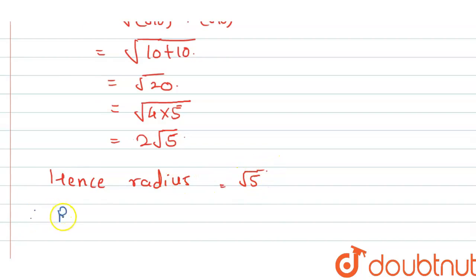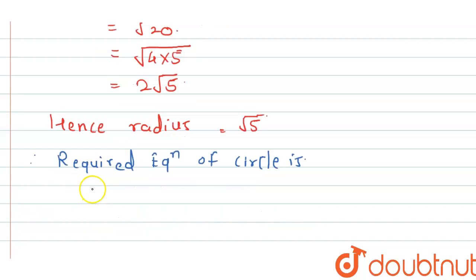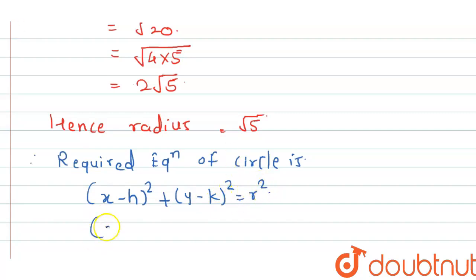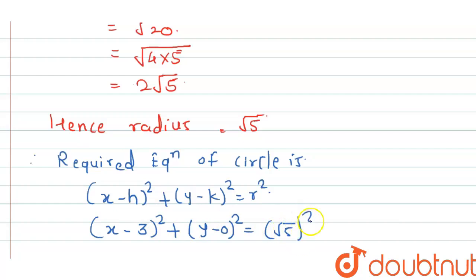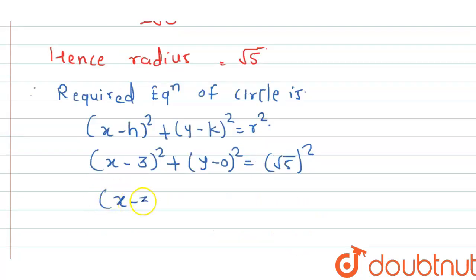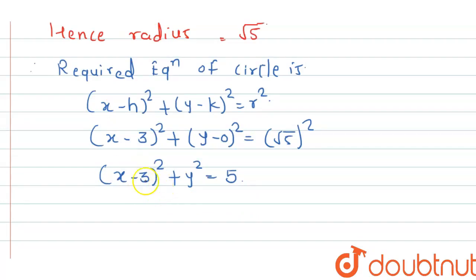The required equation of the circle is (x - h)² + (y - k)² = r². Substituting h = 3, k = 0, r = √5, we get (x - 3)² + y² = 5. This is the required equation of the circle having AB as diameter.